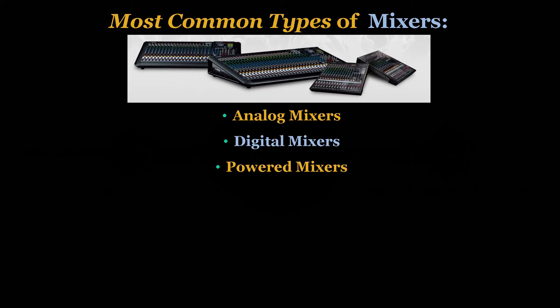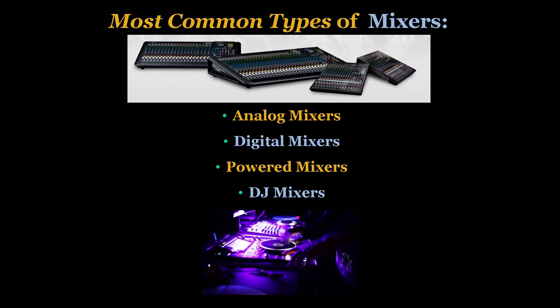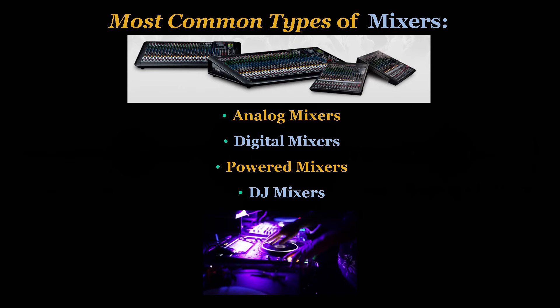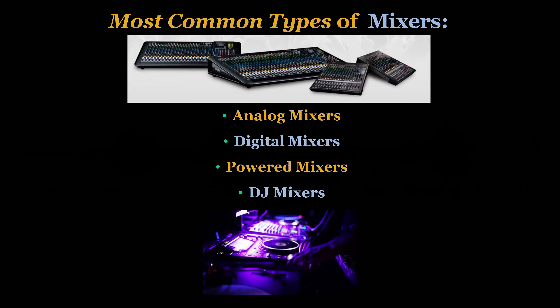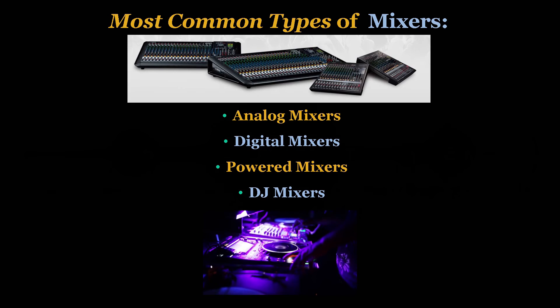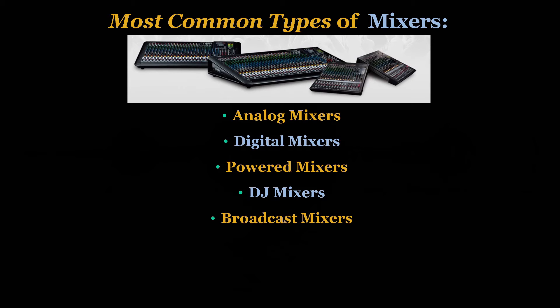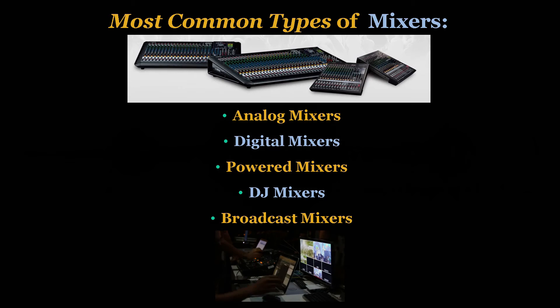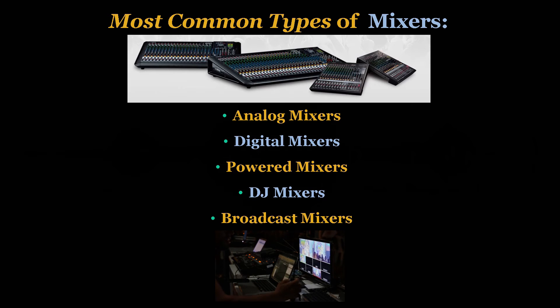Number three are powered mixers. These mixers incorporate power amplifiers, allowing them to drive speakers directly without the need for a separate amplifier. They're often used in small sound systems for portable applications. Number four are DJ mixers. DJ mixers are designed specifically for use by DJs and include features such as cross faders, EQ controls, and effects processing. They may have built-in sampling and looping capabilities. Number five are broadcast mixers. These mixers are designed for use in radio and television broadcasting and include features such as talkback, cueing, and routing options for multiple audio sources.